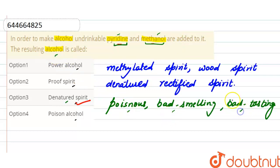This denatured spirit is also used for industrial purposes. An example is it is used as a fuel for alcohol burners.